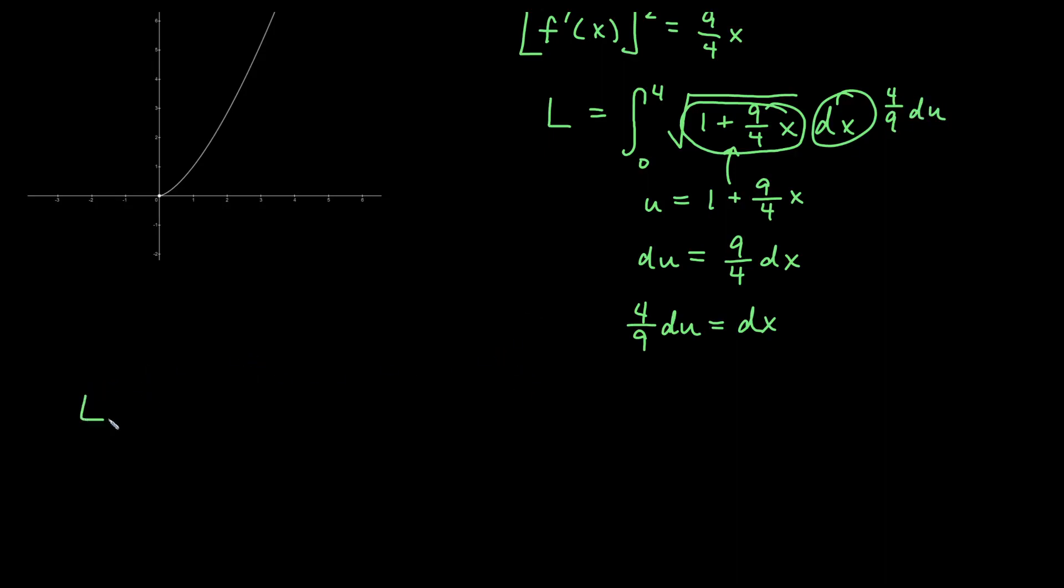Let's go ahead and work that. The length is going to equal... now remember, these are x bounds, not u bounds. So even though I'm changing into u, I'm going to leave these as x bounds. So I would have the square root of u, and then my dx becomes 4 ninths du.